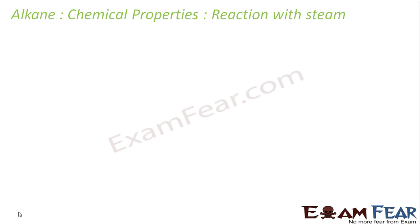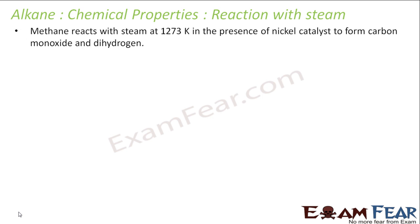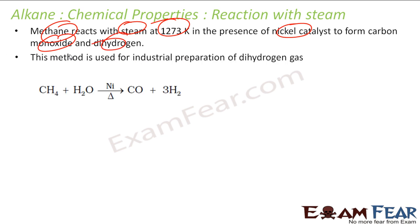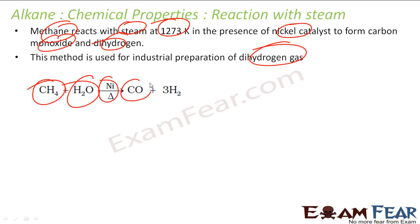Now let's see how alkanes behave when heated with steam — very hot water. For example, methane reacted with steam at very high temperature in the presence of nickel catalyst forms carbon monoxide and dihydrogen gas. This reaction is used industrially to prepare dihydrogen gas from methane using steam at very high temperature with a nickel catalyst.